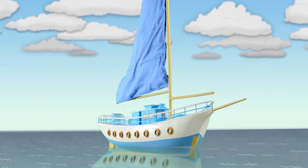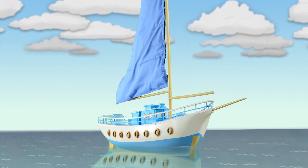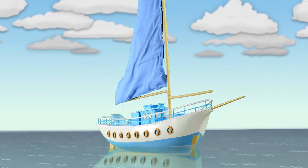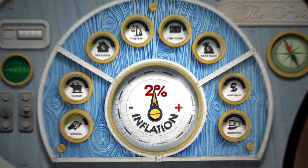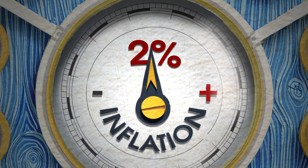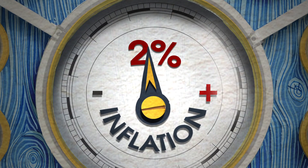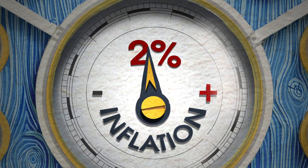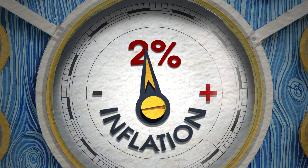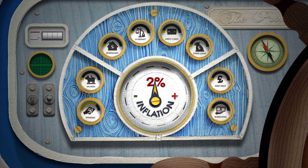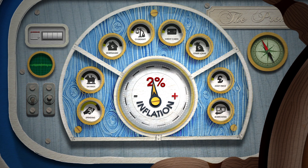So the government has given the Bank of England the job of maintaining inflation at a steady rate of 2%. That is the target, but inflation will fluctuate due to unexpected events and influences.